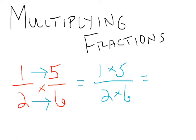I have 1 times 5, which is equal to 5, over 2 times 6, which is equal to 12. So my answer comes out to be 5 twelfths.